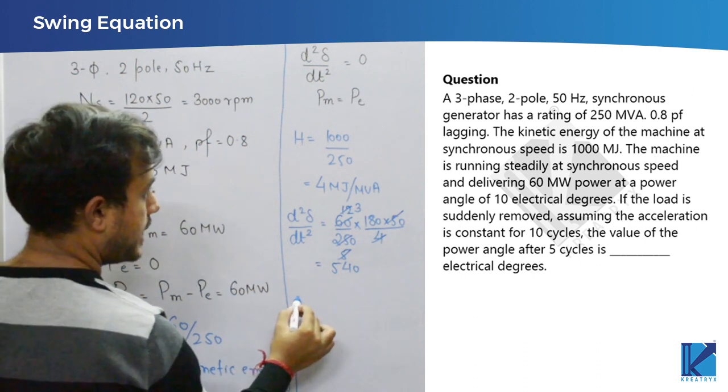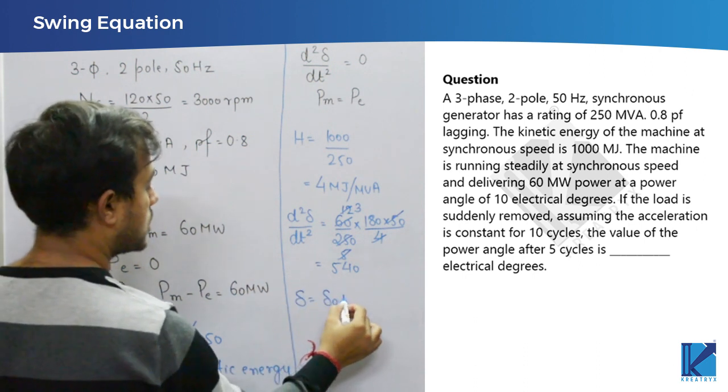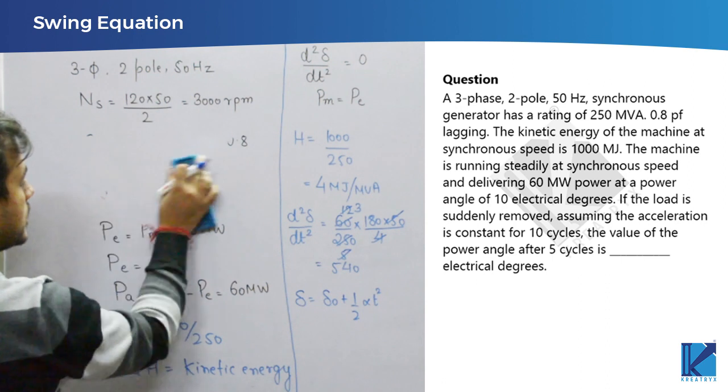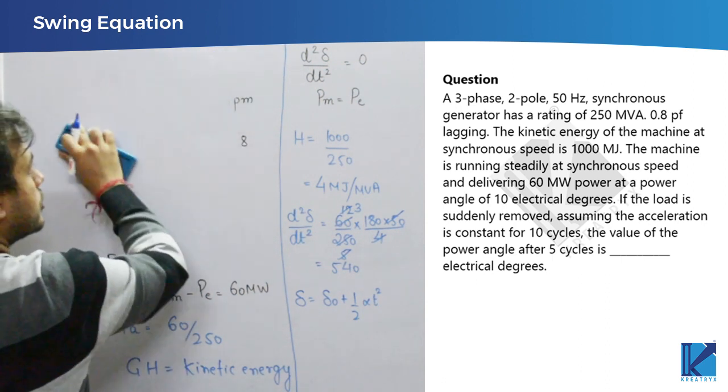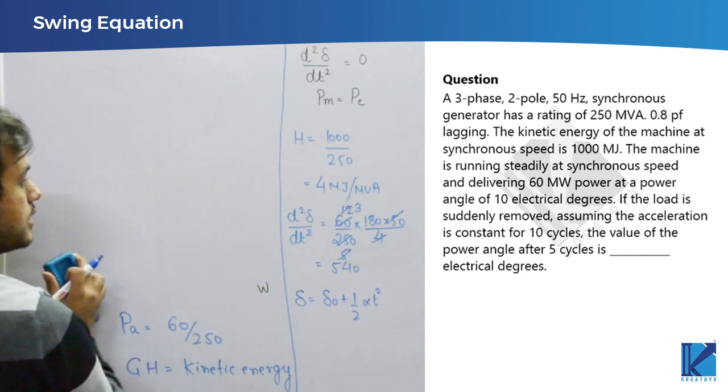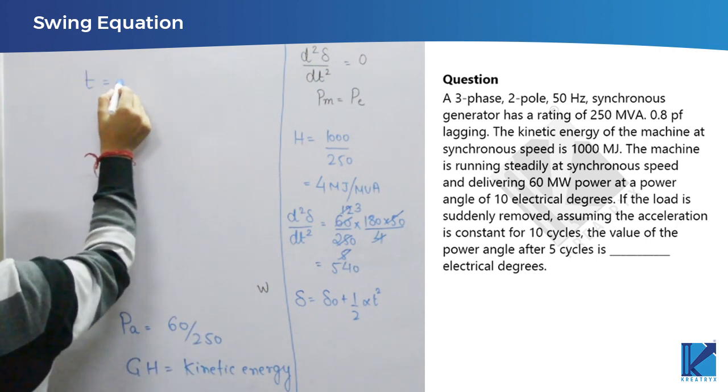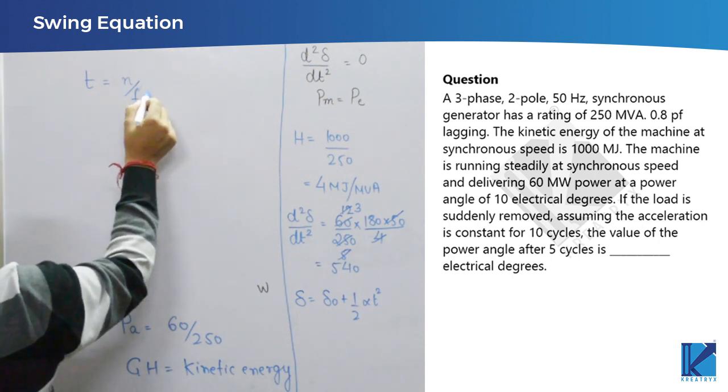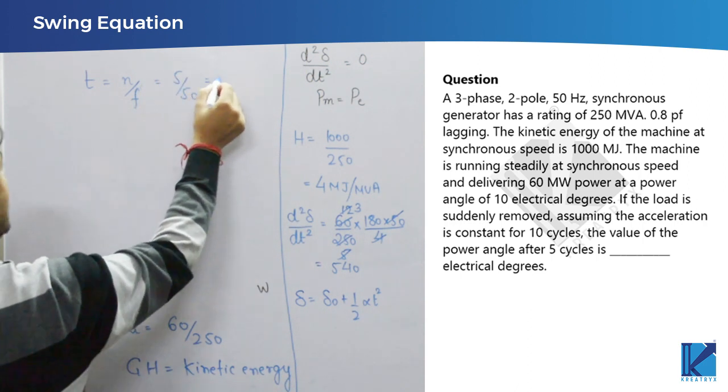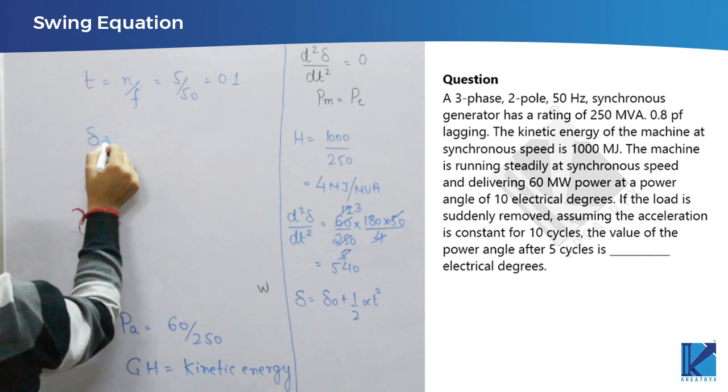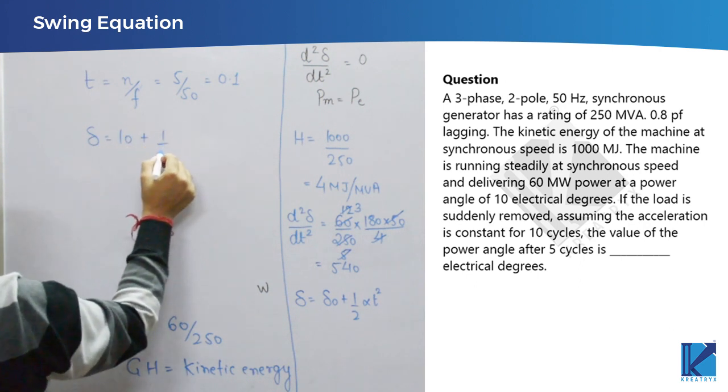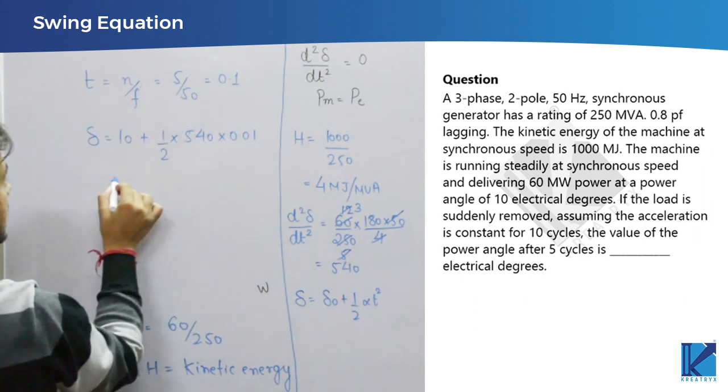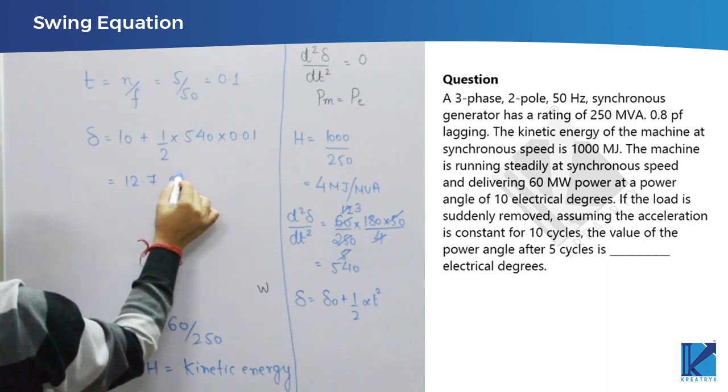Now, it is asking us after 5 cycles the value of delta. Delta is delta naught plus half alpha t square. So, for 5 cycle, we have to first find the time of 5 cycles. As I have told you the time of n cycle is n by f, so 5 by 50 that is 0.1. So, what will be the value of delta? 10 initial value was given as 10, plus half into 540 into 0.01, that is 12.7 electrical degree.